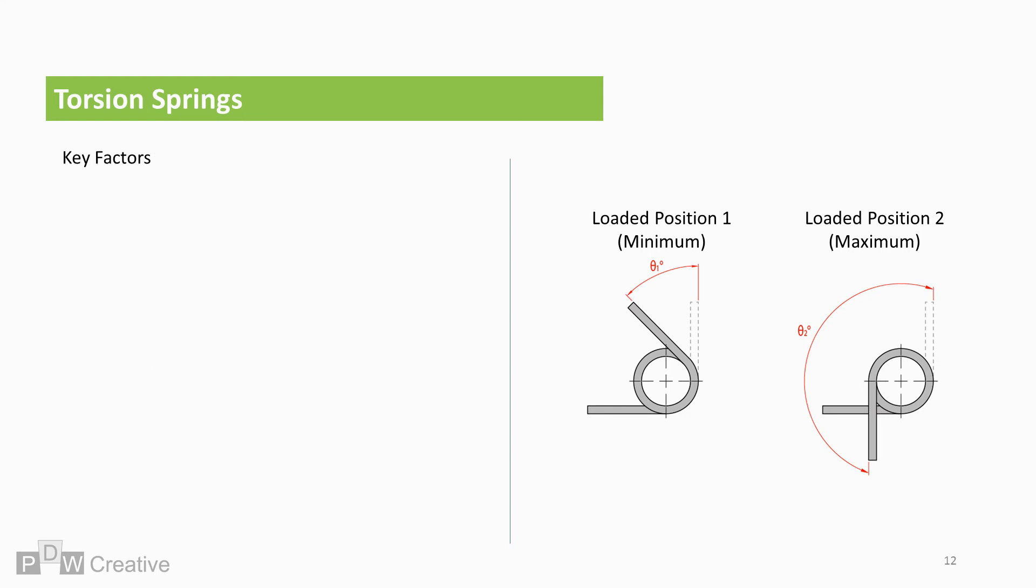Let's now look at spring design factors. Spring rate tells us how stiff the wire is and also governs the torque transmitted. The larger the wire diameter, the greater the stiffness and therefore higher the rate.